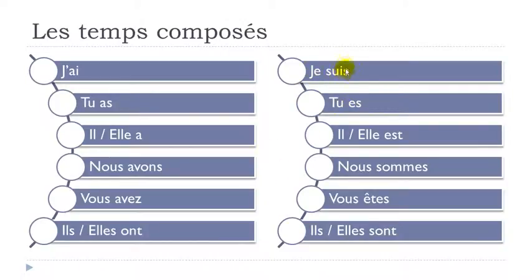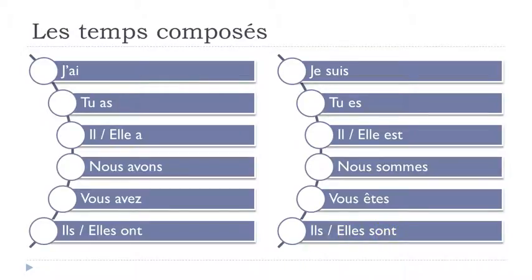For pronunciation: j'ai, tu as — final S not pronounced, il a, elle a, nous avons — final S not pronounced with a liaison, vous avez — Z sound at the end, ils ont — final T not pronounced with liaison. For être: je suis — final S not pronounced, tu es and il est sound the same phonetically, nous sommes — final S not pronounced, vous êtes — liaison, ils sont and elles sont — final T not pronounced. The participe passé will be covered in a separate dedicated video on the channel.